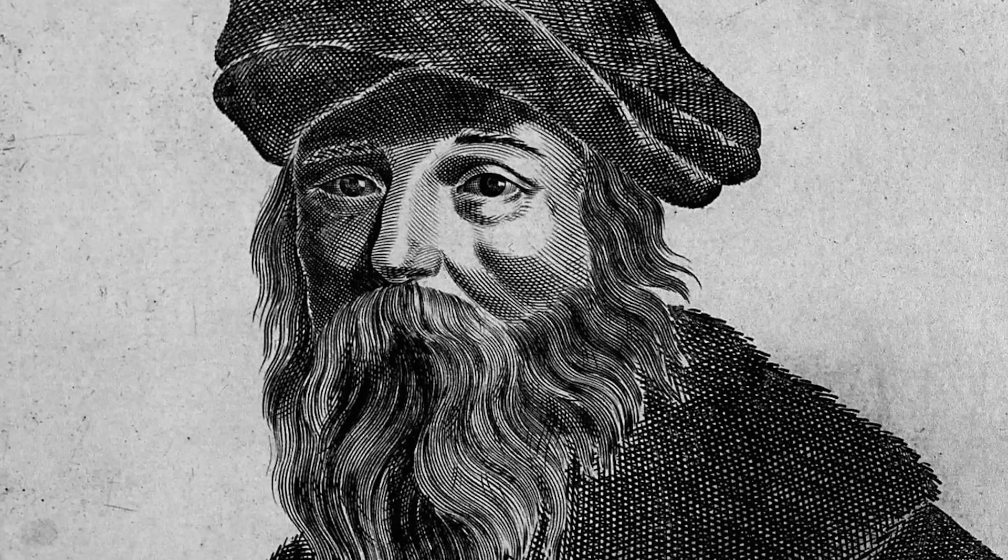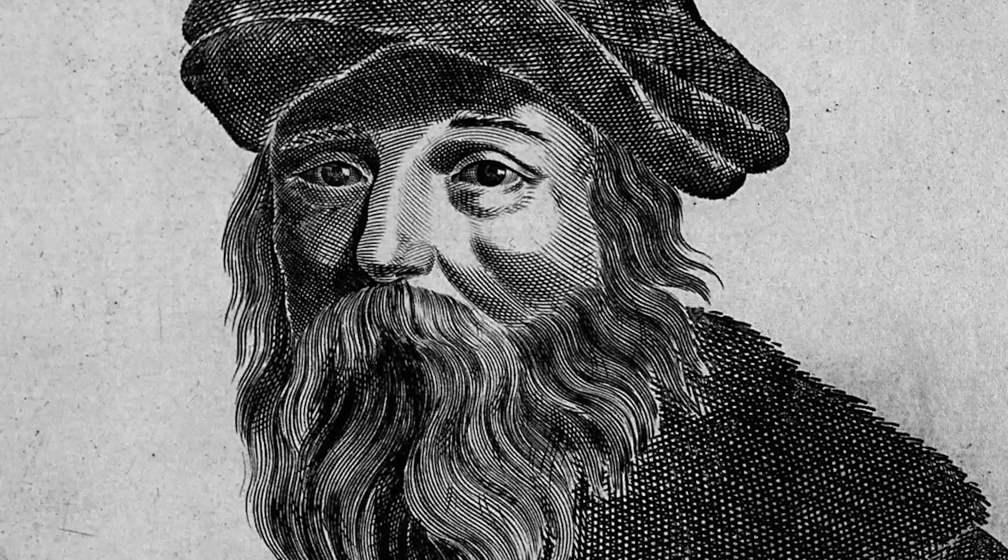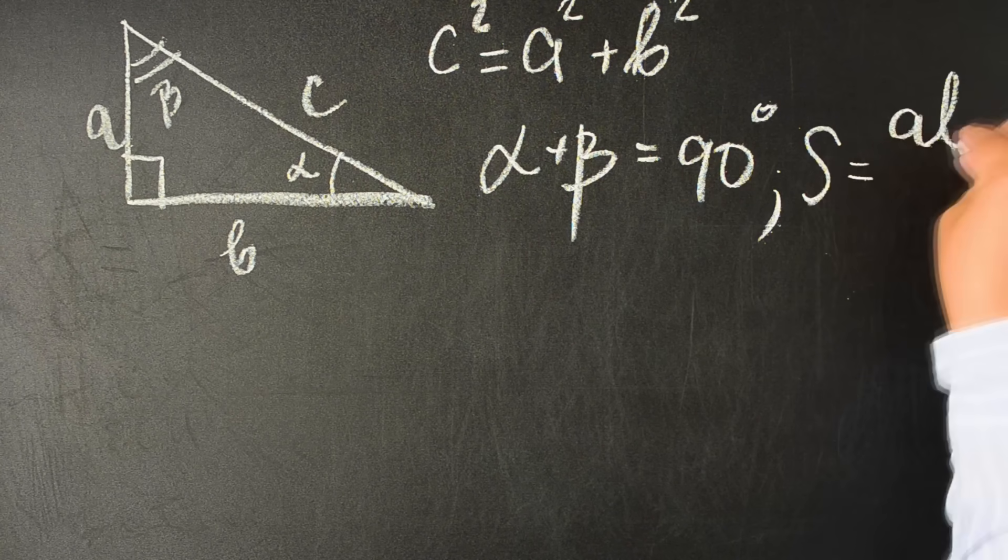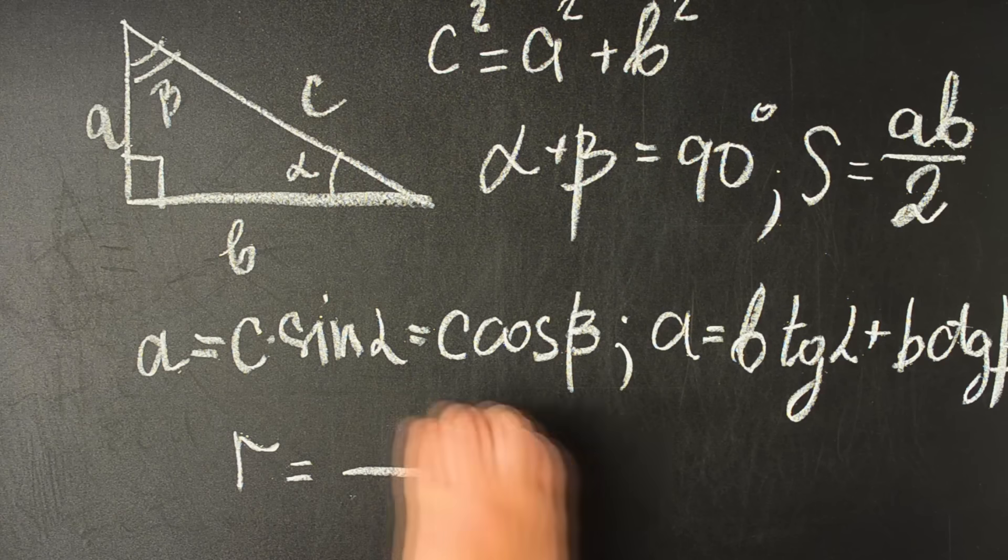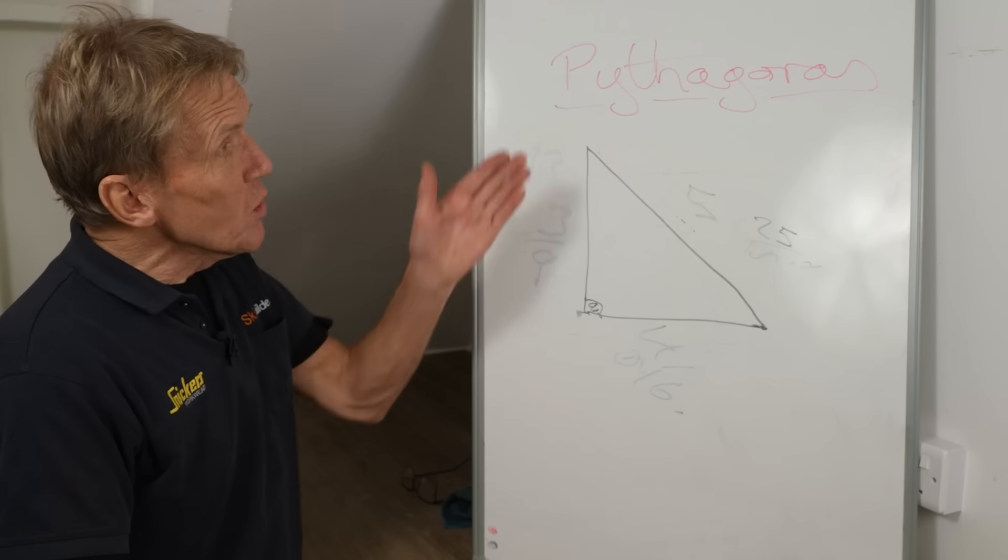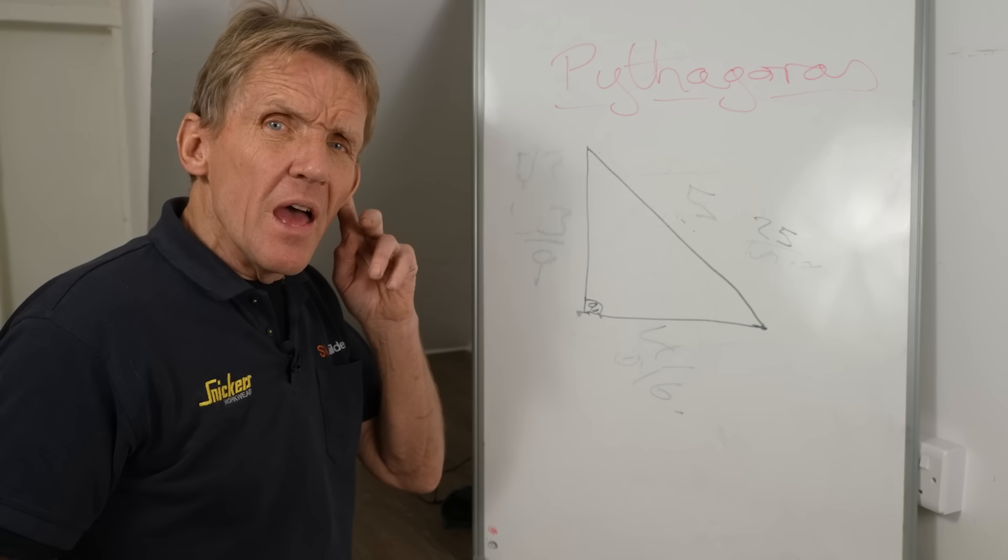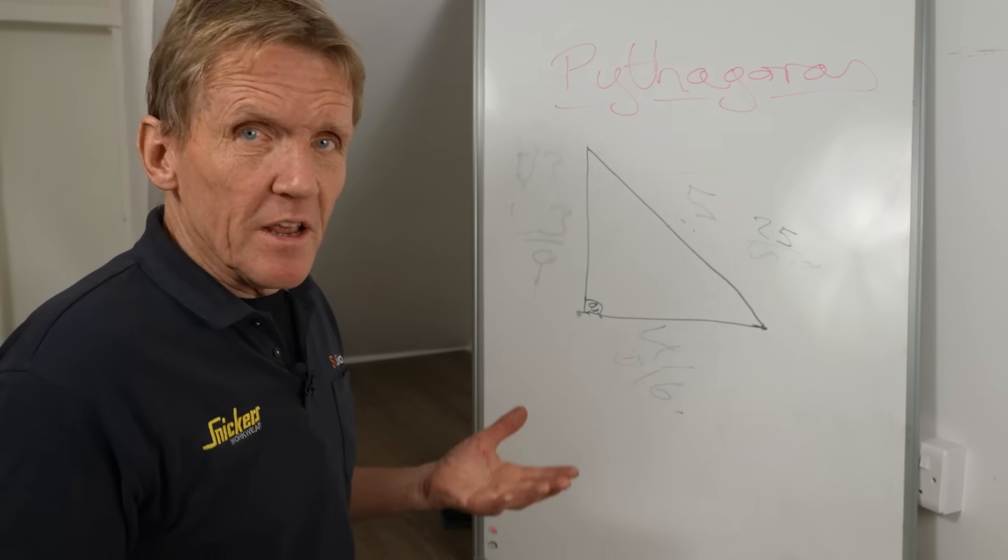Pythagoras had a lot of followers, a lot of students, because he came up with this wonderful theorem—or so they say. Actually, they now say that it was around long before Pythagoras, and all he did was hear about this from somebody passing through on his Greek island, and he thought, 'That's good, I'm having that.'